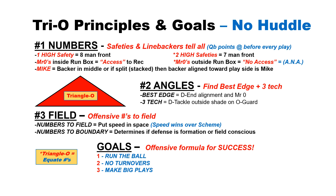Number two, we want to look for best blocking angles. We are an outside-in team, so we're going to look for our best edge, and then go to that three technique — the defensive tackle who's an outside shade on the guard. Number three, we want to get our offensive numbers to the field. We basically want to put speed in space because speed wins over scheme.